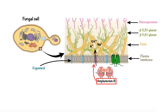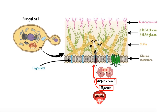Another antifungal that also binds to ergosterol causing leakage of intracellular components is a drug called Nystatin. Although Nystatin has the same mechanism of action as Amphotericin B, Nystatin is more toxic and because of that it is not used systemically. Nystatin is also not absorbed from mucous membranes and skin, which is why its use has been largely limited to the treatment of superficial candida infections of the mouth, skin, intestinal tract, and vagina.